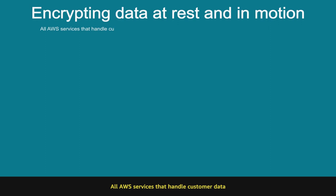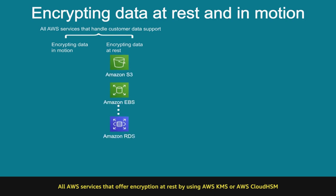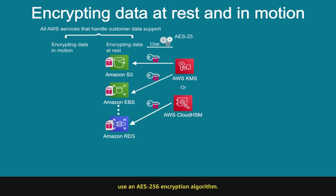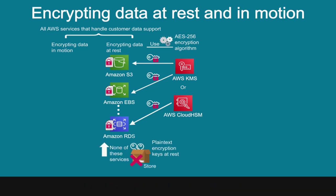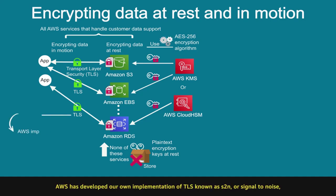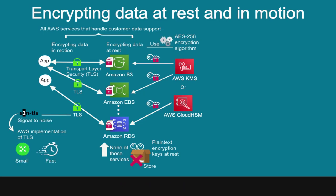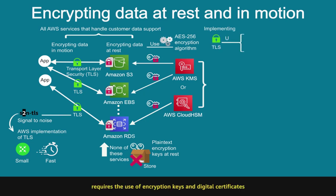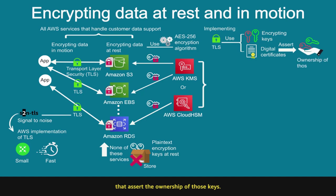All AWS services that handle customer data support encrypting data at rest and in motion. All AWS services that offer encryption at rest by using AWS KMS or AWS Cloud HSM use the AES-256 encryption algorithm. None of these services store plaintext encryption keys at rest. When encrypting data in motion, AWS services use the Transport Layer Security protocol to provide encryption between your application and the AWS service. AWS has developed its own implementation of TLS, known as S2N, or signal-to-noise, which was designed to be small and fast.